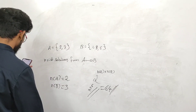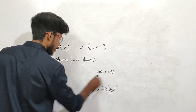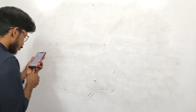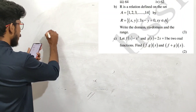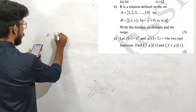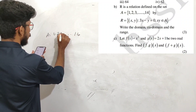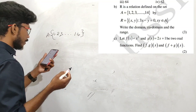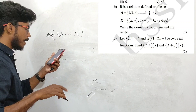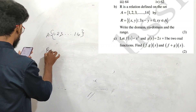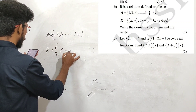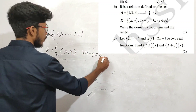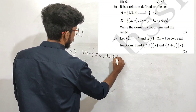Now the second question. You can define a relation on A. A is the set 1, 2, up to 14. R is a relation defined on set A by R equals the set of ordered pairs x, y such that 3x minus y equals 0, where x, y belongs to A.